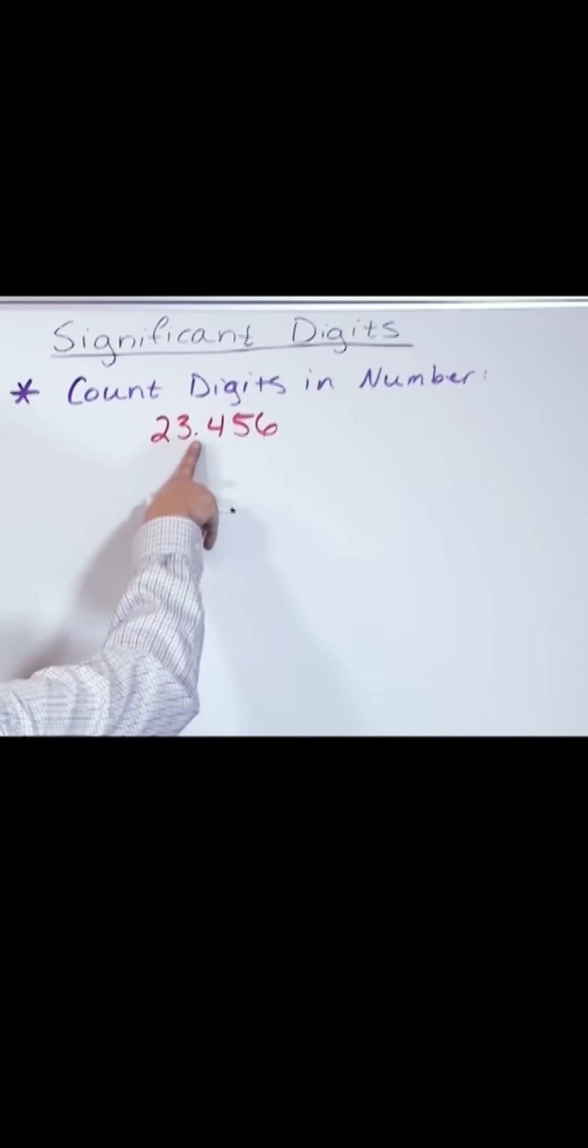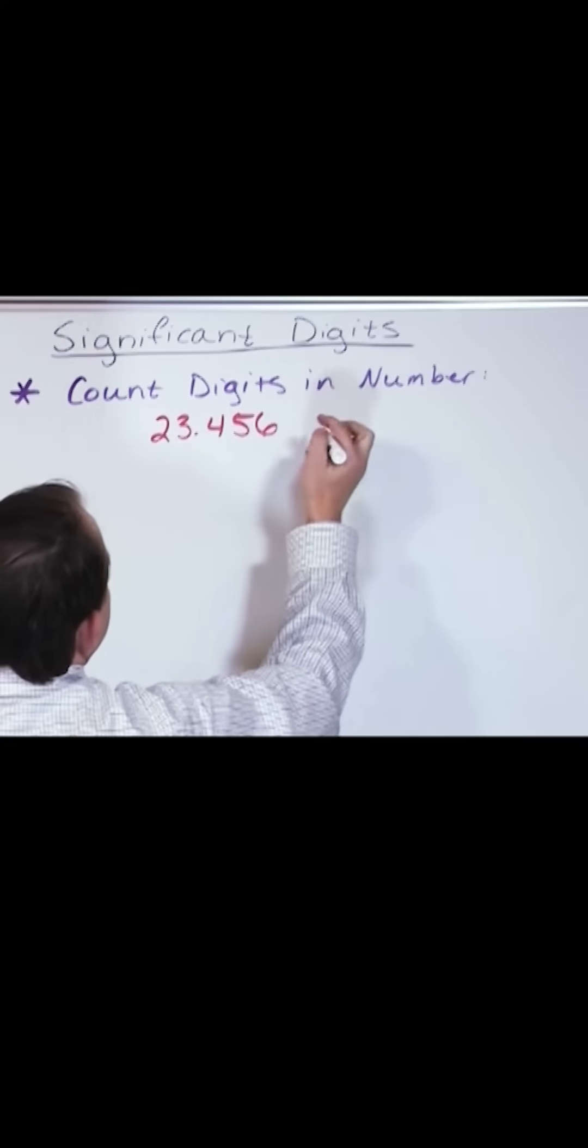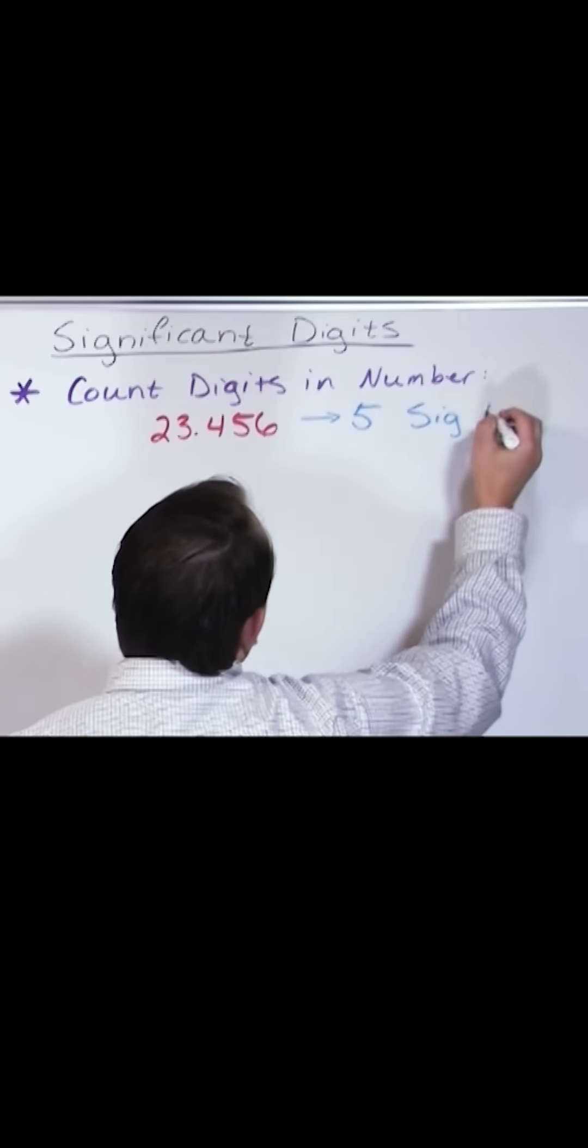It does not matter that there is a decimal there. One, two, three, four, five. This is five significant digits.